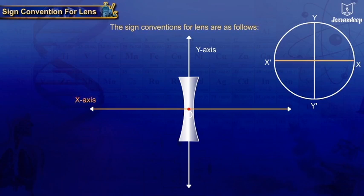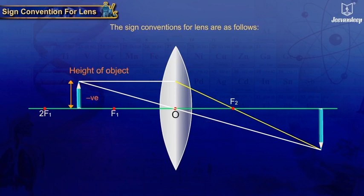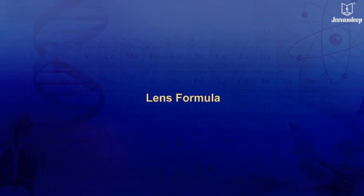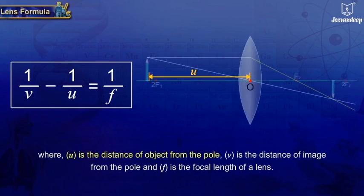Care should be taken to apply appropriate signs for the values of object distance, image distance, and focal length according to the type of lens, as well as the height of object and height of image. The lens formula gives the relationship between object distance u, image distance v, and focal length f, expressed as: 1/v − 1/u = 1/f.